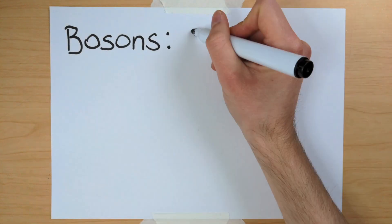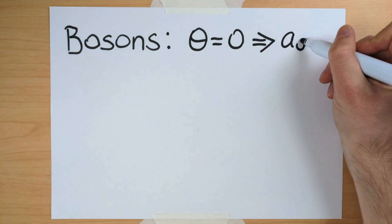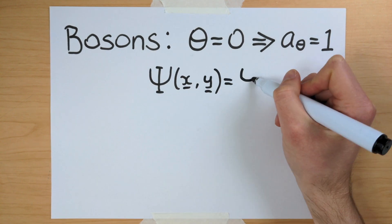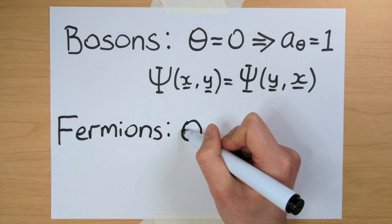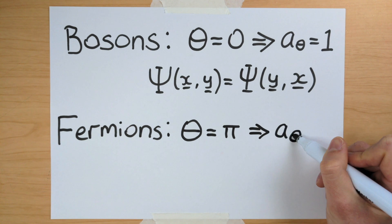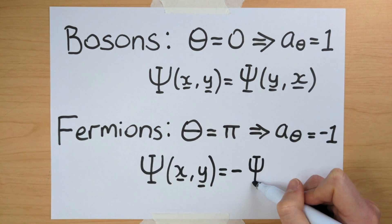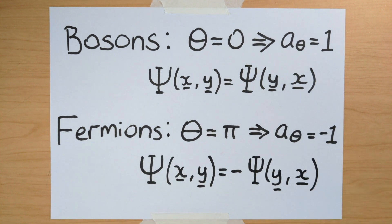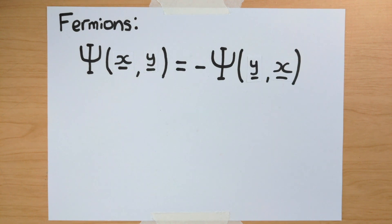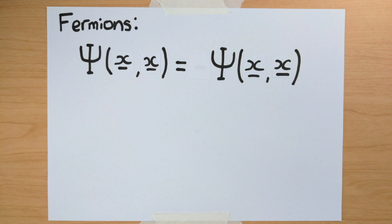So now we're ready to define fermions and bosons. If that rotation angle is equal to zero, so the two output numbers are the same, the particles are bosons. And if it's equal to 180 degrees, so the outputs are negatives of each other, we call the particles fermions. As a small aside, let's see one of the consequences of this minus sign for fermions.